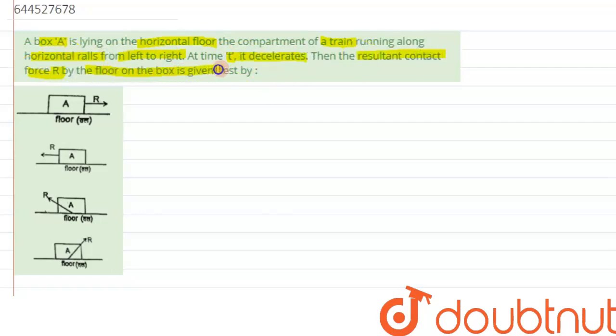R by the floor on the box is given by... So basically we have to calculate the reaction force that the train compartment or the train floor is imparting on the block. Let's try to visualize this.